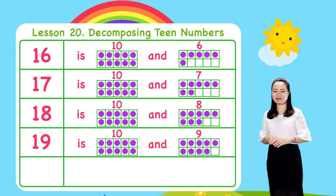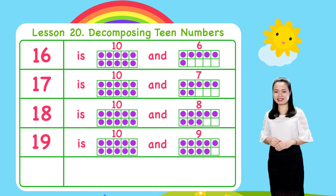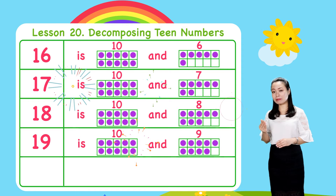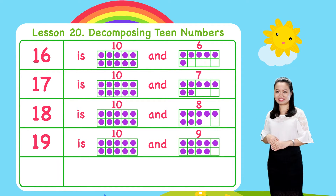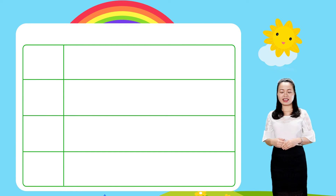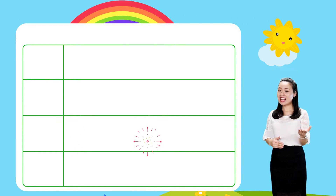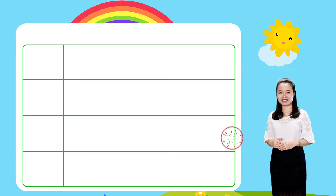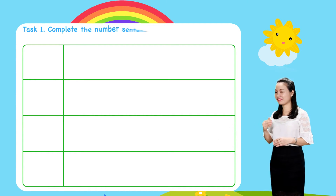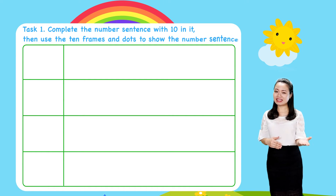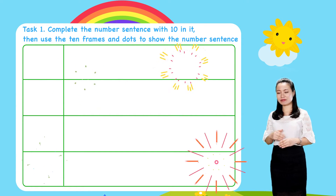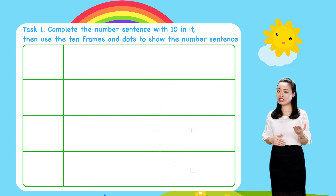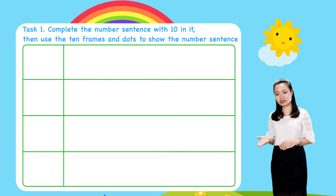So, you see how a teen number is decomposed. Now, let's have some practice. Task 1: Complete the number sentence with 10 in it. Then, use the 10 frames and dots to show the number sentence.